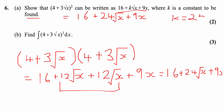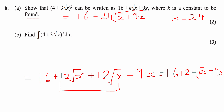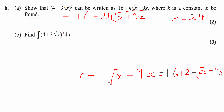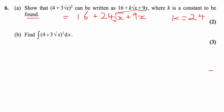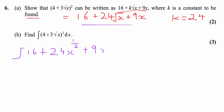Part b asks us to integrate this function with respect to x: find the integral of (4 + 3√x)² dx. We use the result from part a, so this is the same as integrating 16 + 24x^(1/2) + 9x dx — rewriting √x as x to the power of a half.